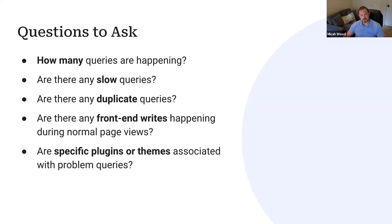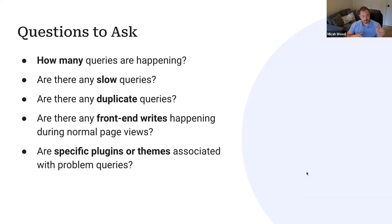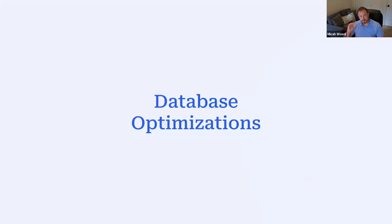Are there any particular plugins or themes associated with problem queries? When you enable Query Monitor and load the front end, a panel appears with a database section showing all queries happening. You can filter by plugin or by theme, and you can look for any front-end writes. Most of these things you can identify using that plugin. We're going to start at the grand scale and work our way into the minutia of database optimization and maintenance.